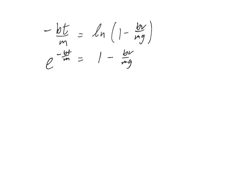Remember, we're still trying to solve for v here, right? So, let's add bv over mg and subtract e to the stuff. So, we get bv over mg on the left now is equal to 1 minus e to the stuff. And multiplying by mg over b to solve for v, we have now done it.